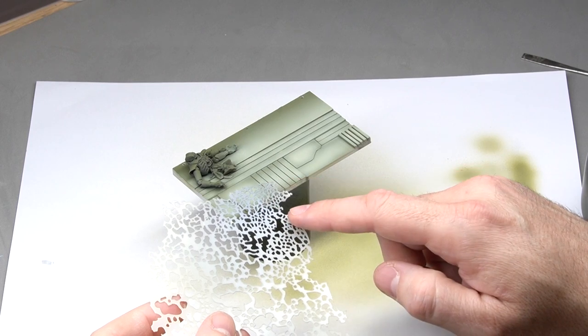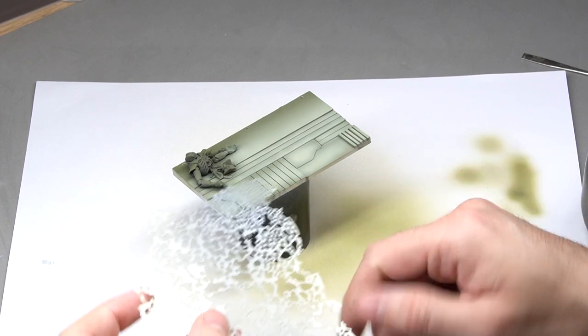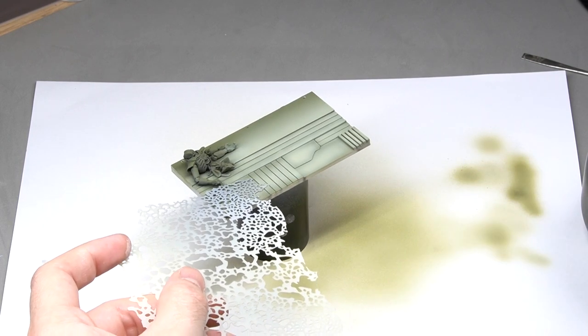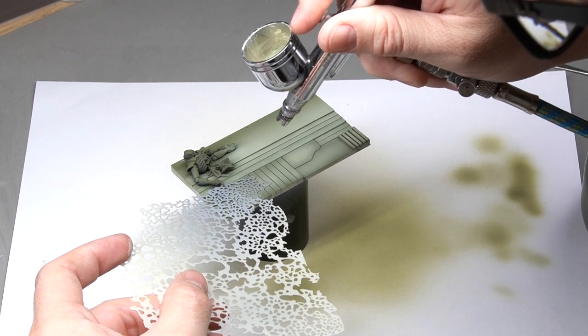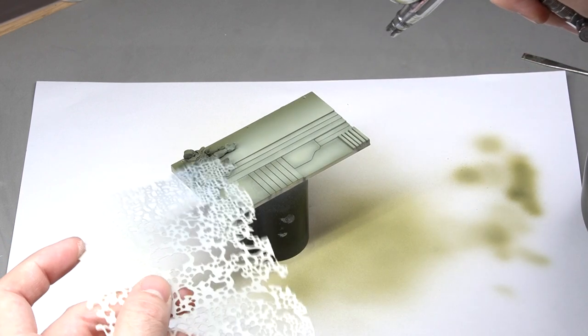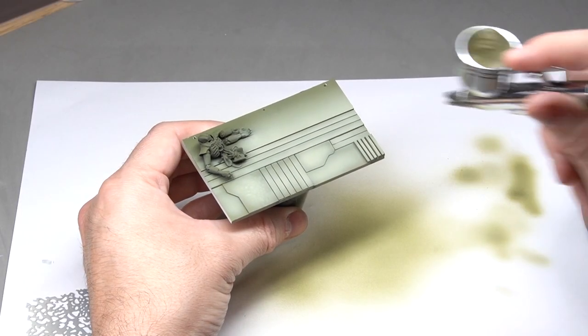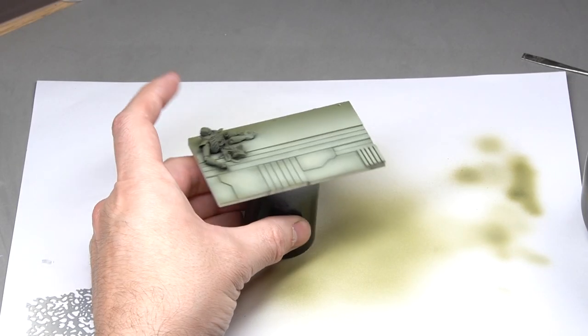We'll look for an area where the pattern has a similar scale to what we're working on. We place it on top and use our airbrush to apply small sprays. We'll repeat this process across the entire surface.